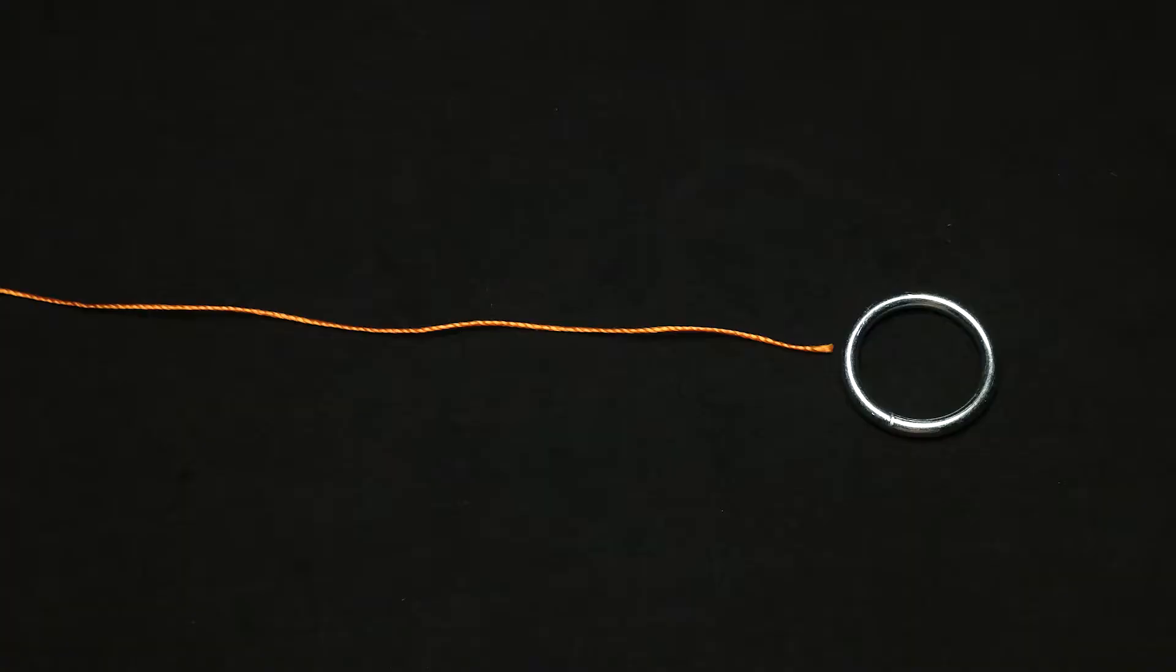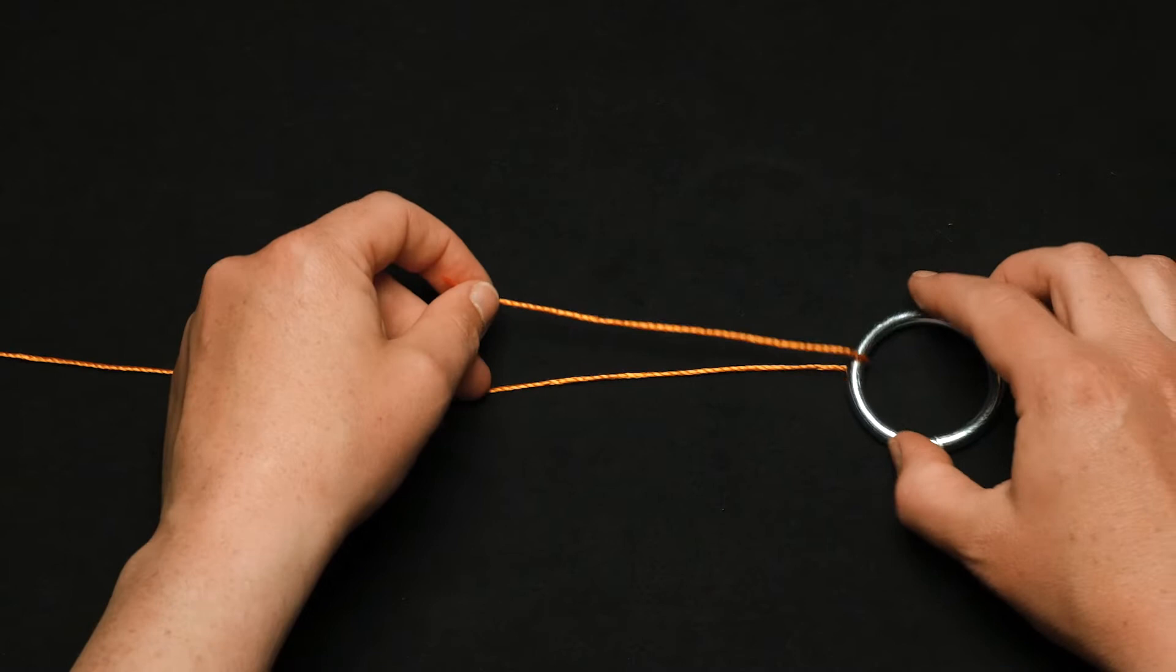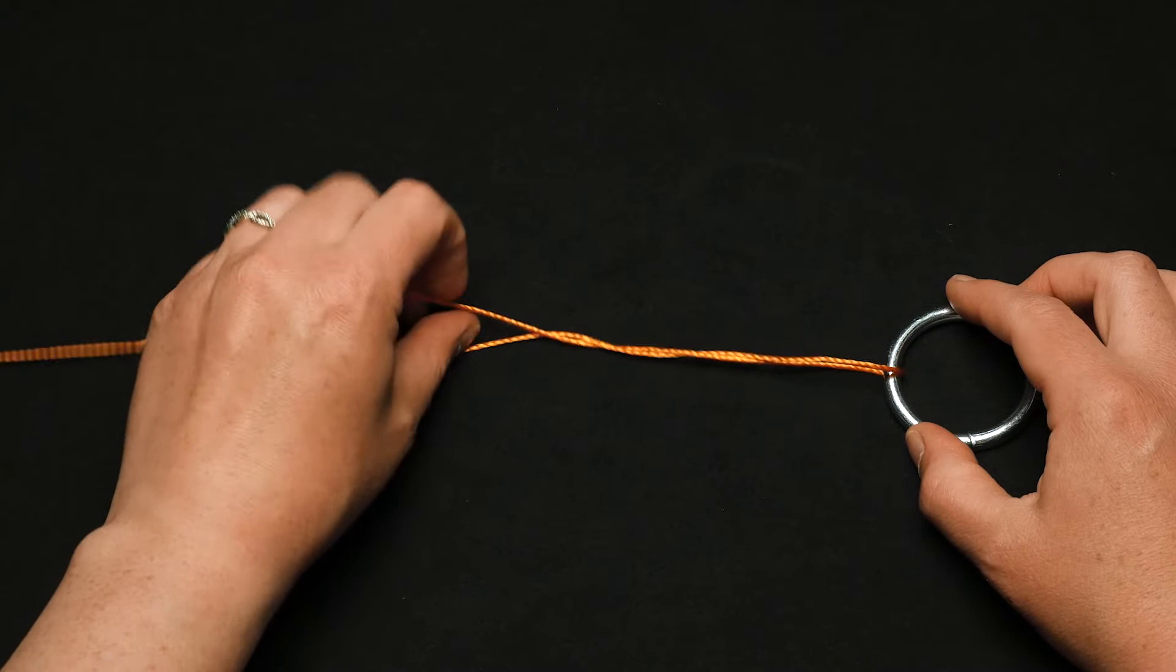First, thread the end of the line through the eye of the hook, swivel, or lure. Double back and make five or more turns around the standing line.